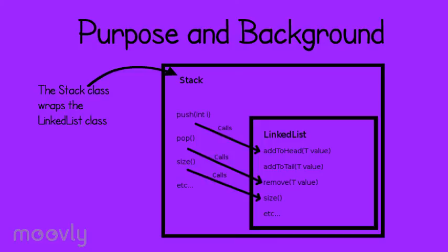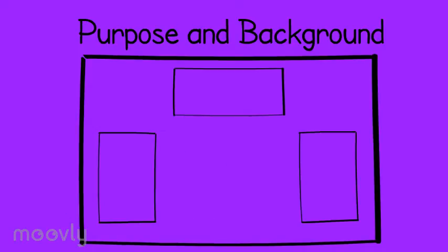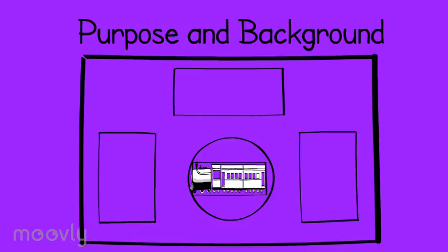For example, in this lab, our stack class will have a linked list inside of it, and it will use the linked list to implement all of its functions and store all of the incoming integers. The background story behind the lab is that you're writing the code for a railroad station where there are three different storage facilities. Each of these garages stores cars differently. There is a turntable that can hold one car at a time that will direct cars to their appropriate garage.